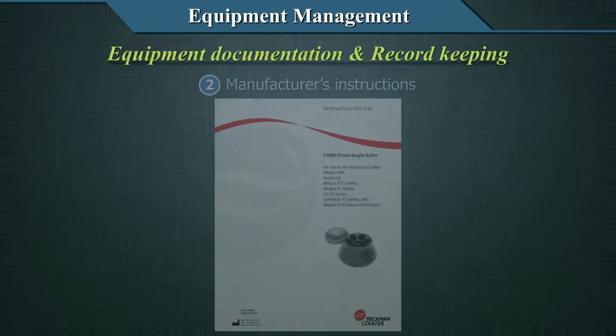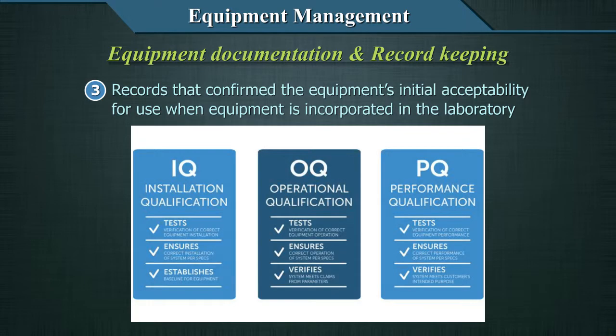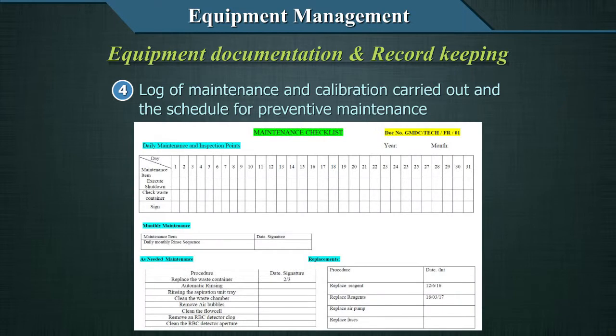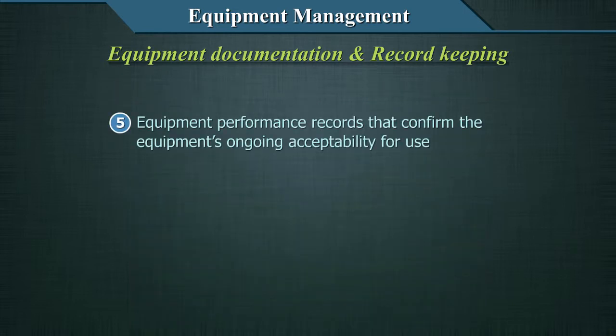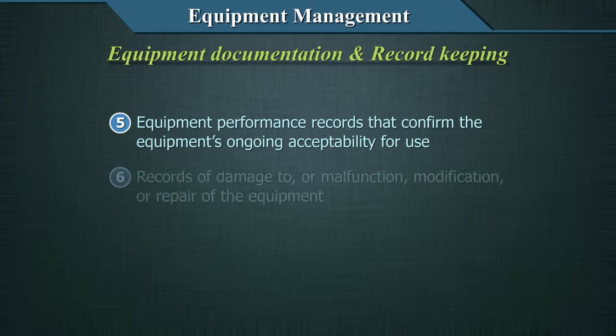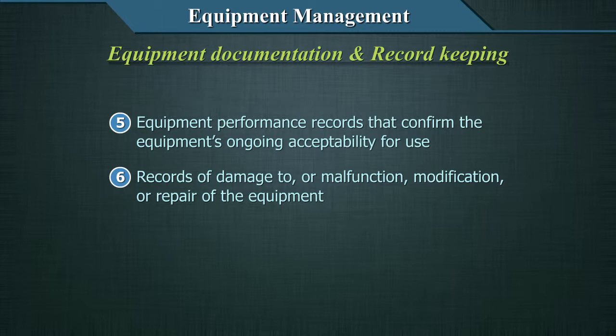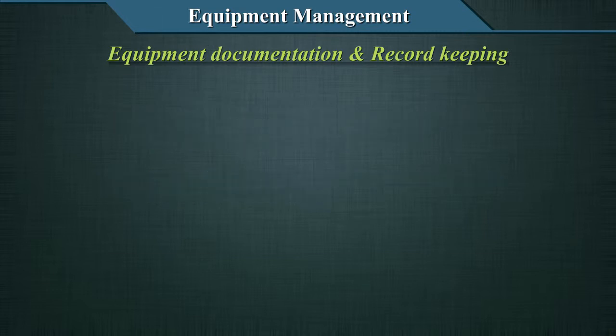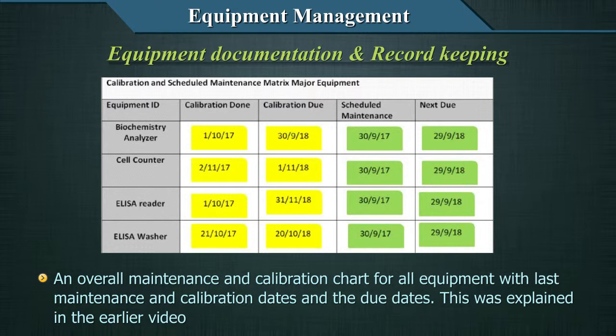Records should also include manufacturer's instructions; records that confirm the equipment's initial acceptability for use when incorporated in the laboratory; the log of maintenance and calibration carried out and the schedule for preventive maintenance; equipment performance records that confirm the equipment's ongoing acceptability for use; and records of damage, malfunction, modification, or repair.